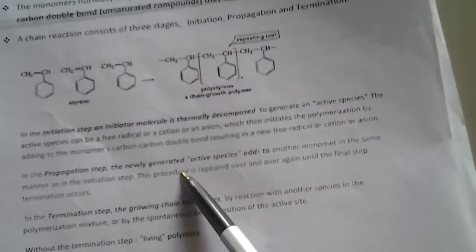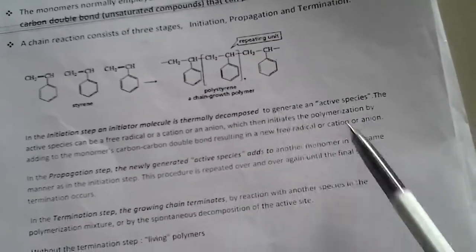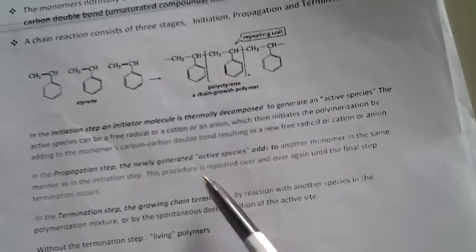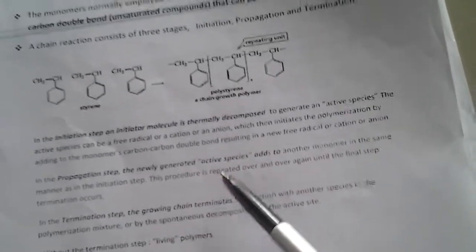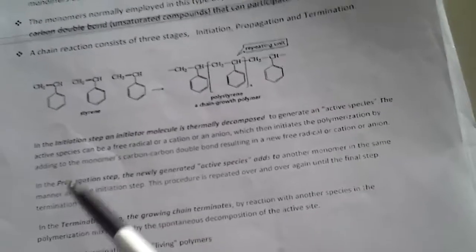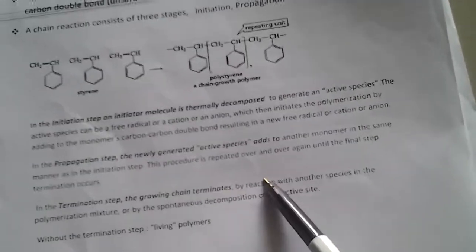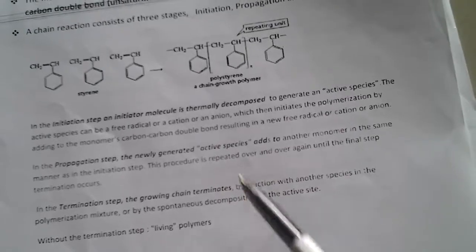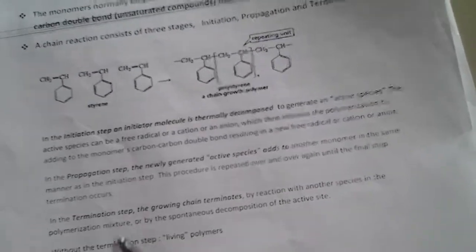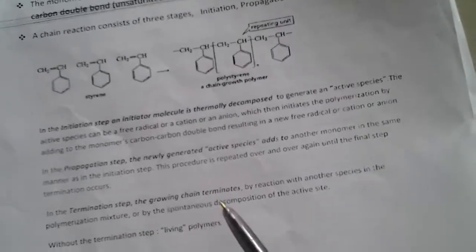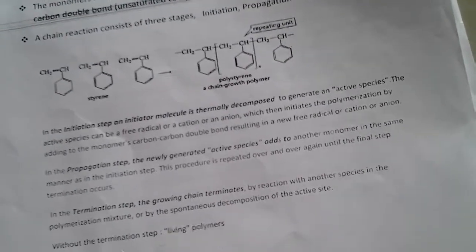In the propagation step, the newly generated active species adds to another monomer in the same manner as in the initiation step. This can be repeated several times, hence it is called the propagation step. In the termination step, the growing chain is stopped by reaction with another species in the polymerization mixture or by spontaneous decomposition of active molecules.